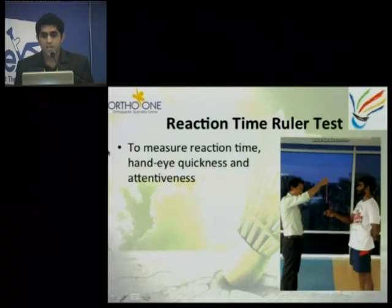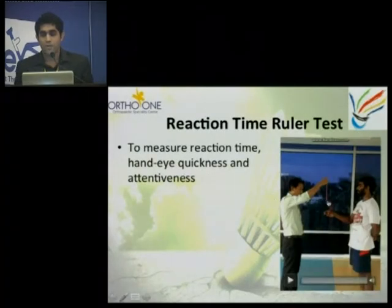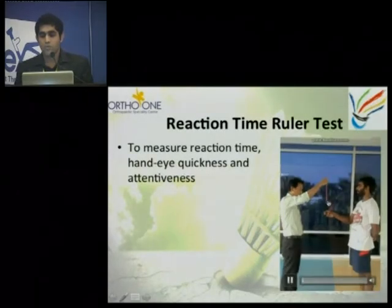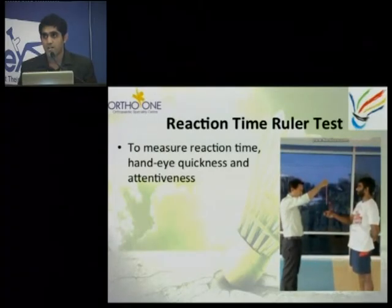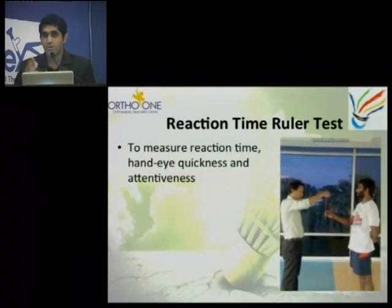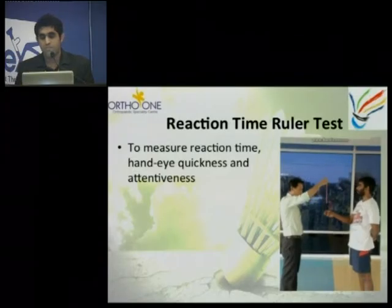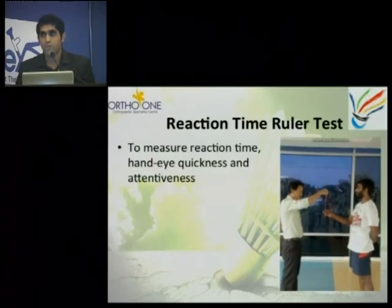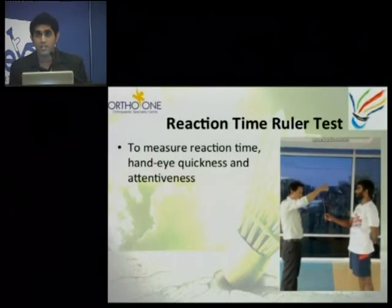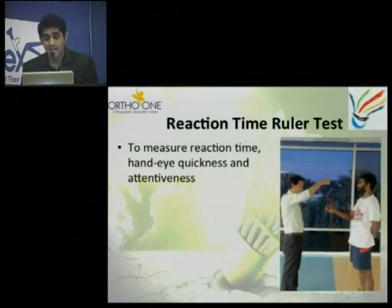This simple reaction time test involves asking your athlete to hold a ruler or scale. This measures eye-hand coordination, which is very important for each player. Badminton is a very fast game and you need proper coordination of your eyes and hands.